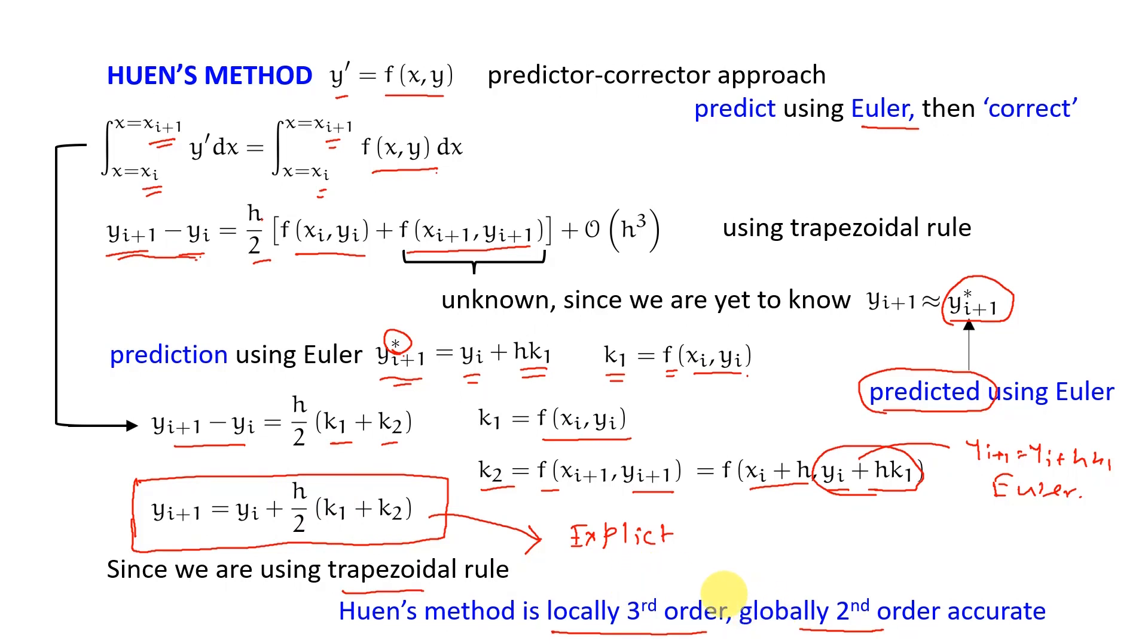Both are good. You can also see that unlike Euler where we are taking this entire h·k1 in one shot, here we are going h/2·k1 + h/2·k2, so we are taking two small steps instead of one shot Euler, and by doing so we are still having explicit but we have higher order accuracy.